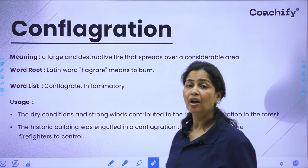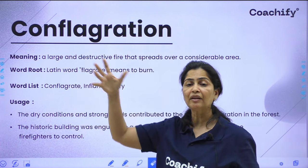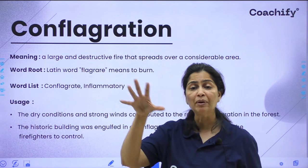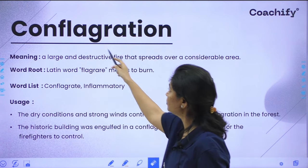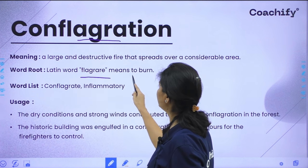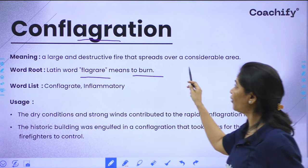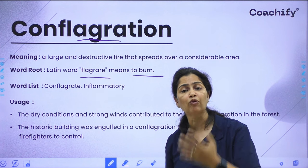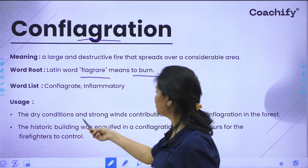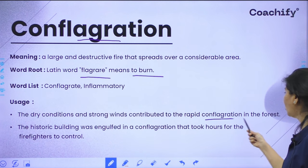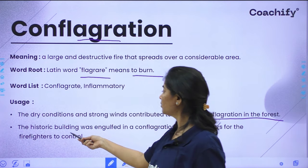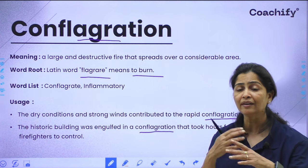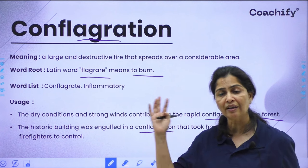Our next word is 'conflagration.' The prefix 'con' brings things together — so when many things are burning together, it is a conflagration. The root word is 'flagrare,' meaning to burn. It refers to a large and destructive fire that spreads over a considerable area, such as forest fires. For example: 'The dry conditions and strong winds contributed to the rapid conflagration in the forest.' Also: 'The historic building was engulfed in a conflagration that took hours for the firefighters to control.'